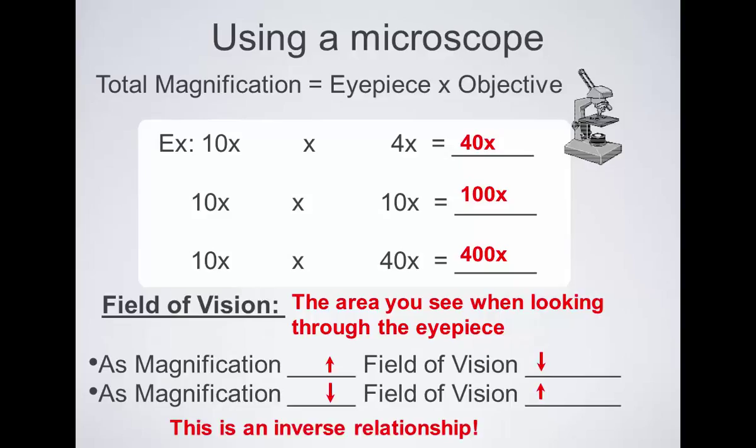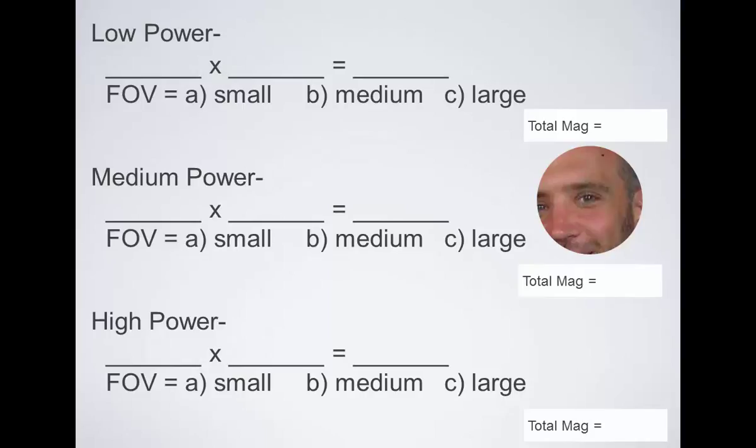Alright, one last slide here today. That's called an inverse relationship, too, by the way. Your math teacher would appreciate me mentioning that. As one thing goes up, the other goes down. So if I'm looking at something under low power, I have the 10x eyepiece. The 4x objective lens for a total magnification of 40x. So I can see all of this weird creature when I'm on low power. So my field of view is what? Do I have a small field of view, or medium, or large? Large. I see a wide area. I can see all of this hideous beast.